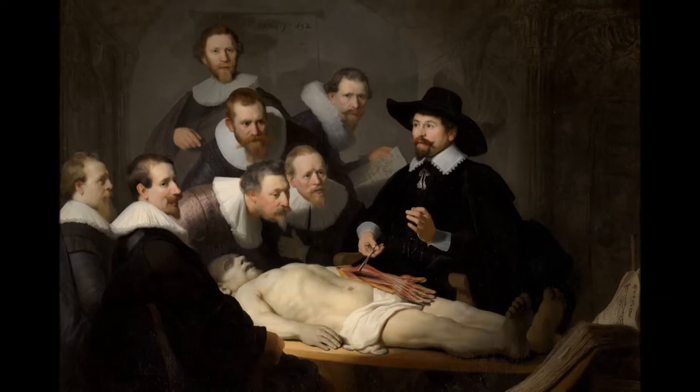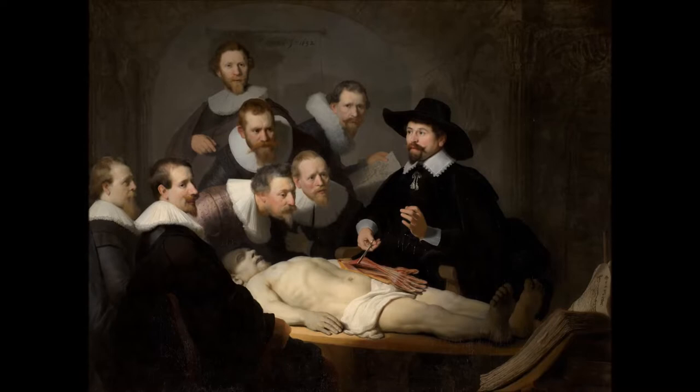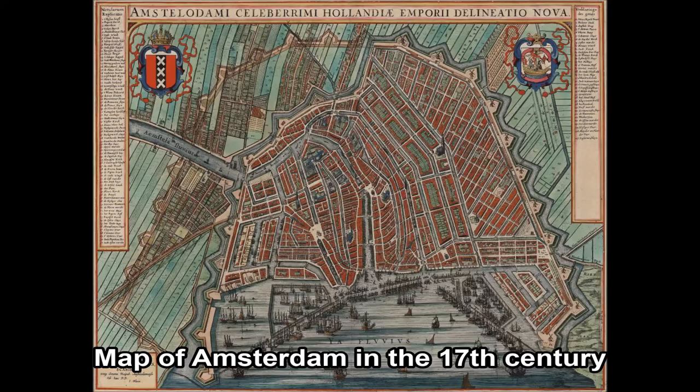When Rembrandt was 25 years old, he painted the Anatomy Lesson of Dr. Nikolaus Tulp, which is on display in the Mauritshuis in The Hague. Dr. Tulp is the central figure and he is giving an anatomy lesson to the Guild of Surgeons in Amsterdam.